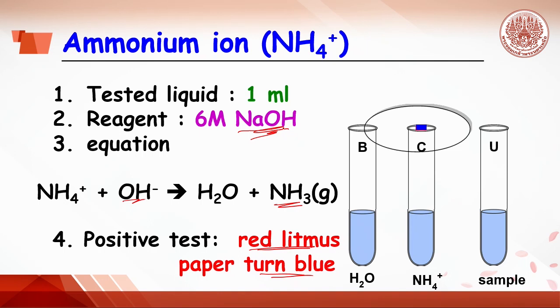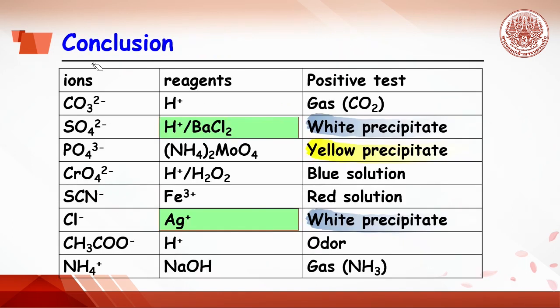In conclusion, on spot test, one ion, reagents, and positive test. The positive test might be bubble, or precipitate, or color of the solution change.